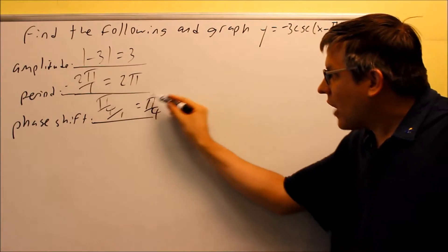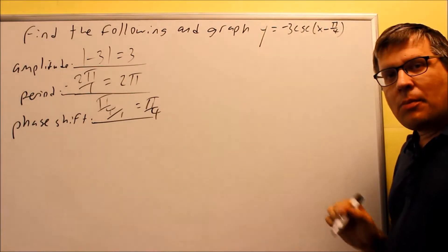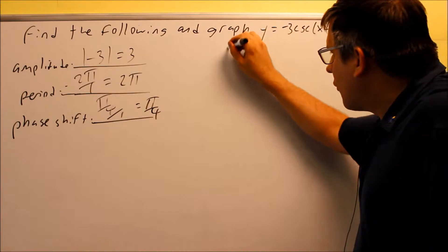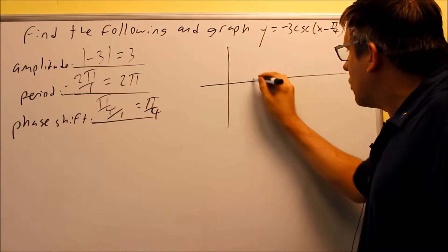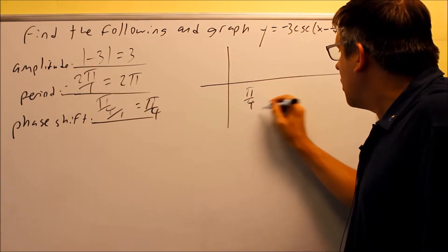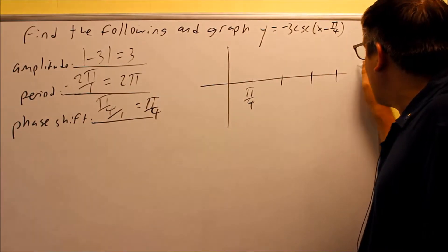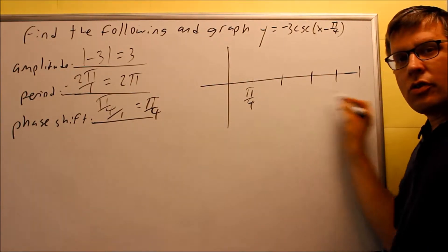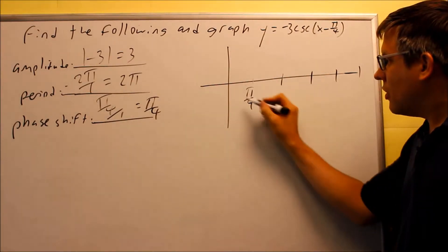That means that the graph is going to now begin at pi over 4. That's the first, the starting point on my graph. So when I do this, it's shifted to the right. That means I'm starting it right here at pi over 4, but I have to find the other four key points there. So here's the first one.